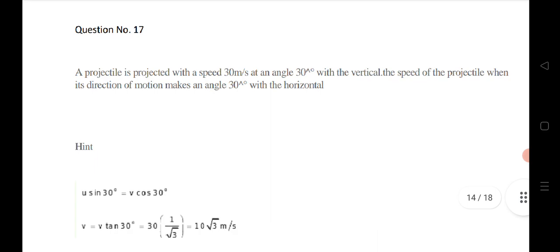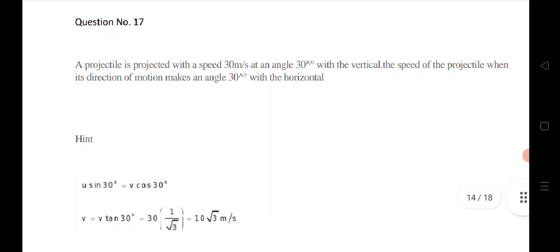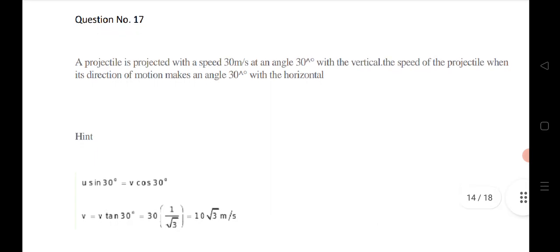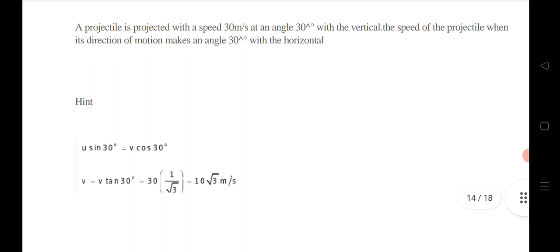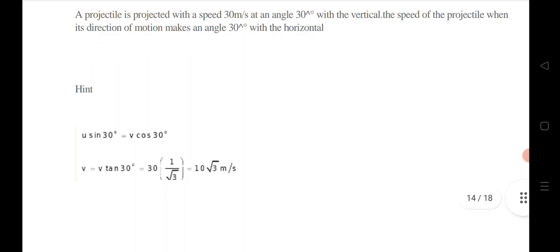Question 17: a particle is projected with velocity 30 m/s at an angle of 30° with the vertical. Since the angle is with the vertical, the horizontal component is u sin 30°. The speed of the projectile when the direction of motion makes 30° with the horizontal equals v cos θ. Setting horizontal and vertical components equal gives the answer for the velocity.